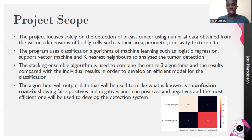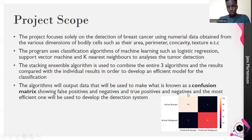Afterwards, we shall develop what is known as a confusion matrix, which is used to show the relationship between actual results and the model's predicted results. As you can see here, we have actual benign (non-cancerous) cells and actual malignant (cancerous) cells on one axis, and what the algorithm has predicted on the other. By comparing them, we can obtain the model's accuracy, F1 score, precision, and recall.